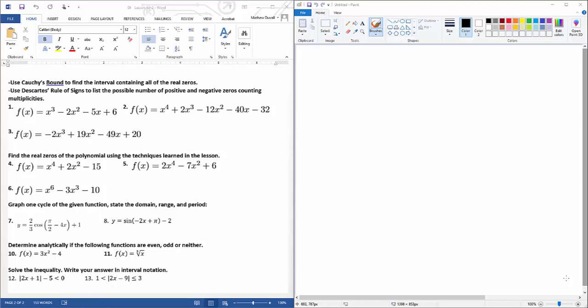Alright, DI 62-2, so let's get right into it, number one. Use Kashi's bound to find the interval containing all of the real zeros.